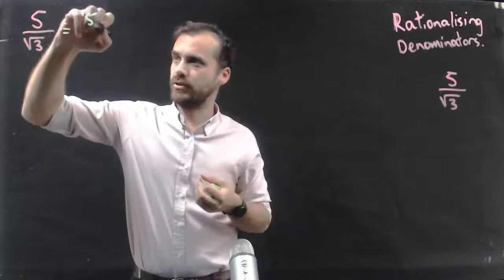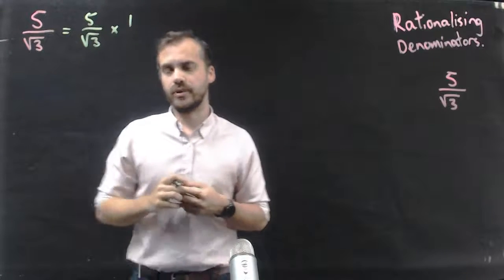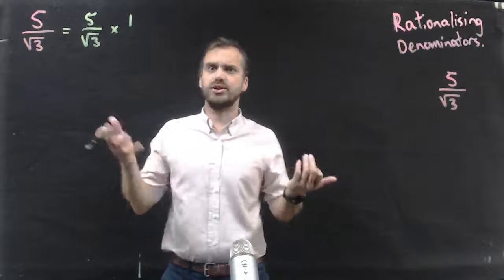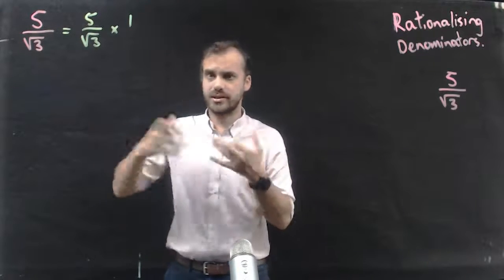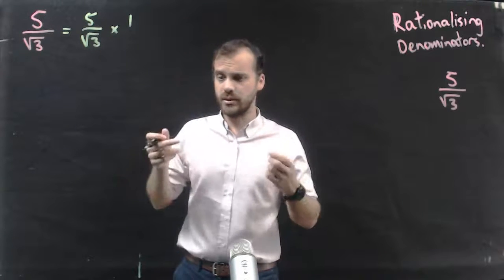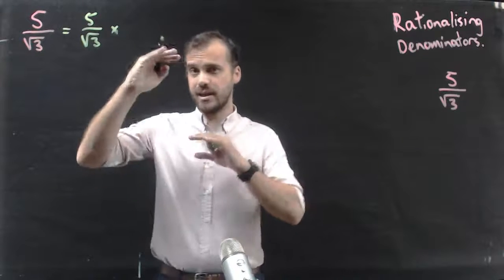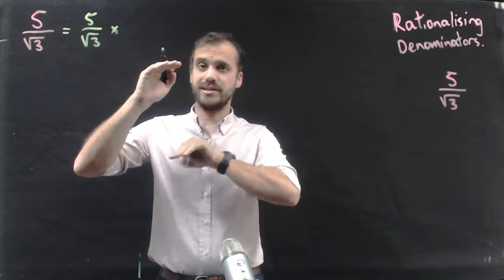So I'm going to do 5 on root 3 times 1. Now, you might look at that and go, well, that's not going to change anything. If you multiply something by 1, it stays the same, and that's true. But I'm going to write the number 1 in a different way. The number 1 can be written as any number divided by itself.